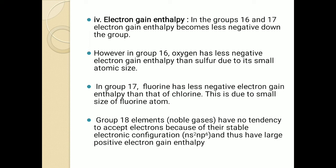Group 18 elements — noble gases — have no tendency to accept electrons because of their stable electronic configuration. Thus they have large positive electron gain enthalpy. This is an exception: positive electron gain enthalpy because they have no tendency to accept an electron. This is all about electron gain enthalpy.